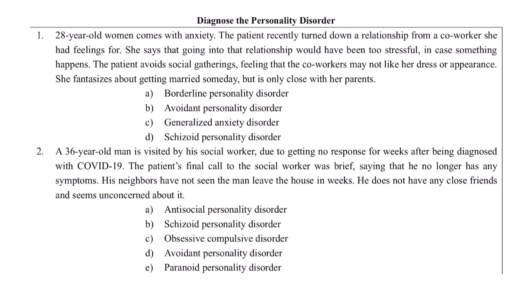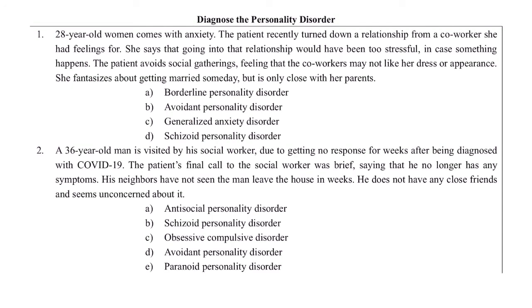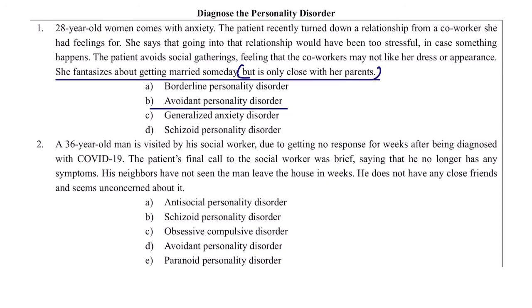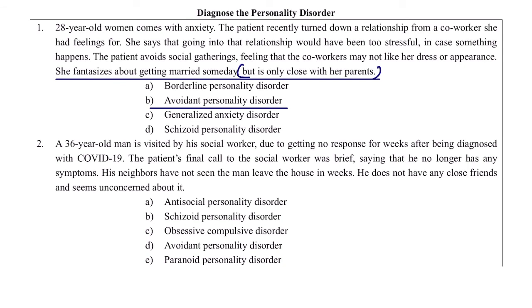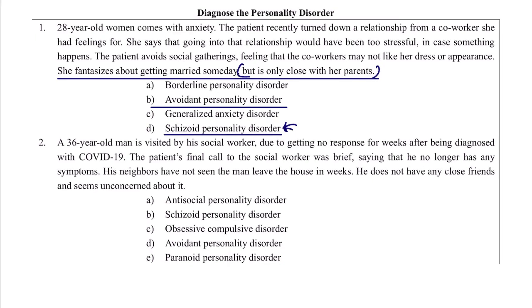Case: a 28-year-old woman comes with anxiety. She turned down a relationship with a co-worker she had feelings for, saying it would be too stressful in case something happens. She avoids social gatherings because she feels co-workers might not like her dress or appearance. She fantasizes about getting married someday but is only close with her parents. This is avoidant personality disorder — they avoid social situations out of fear of embarrassment. This is not schizoid personality disorder because this person is looking for a relationship and is not trying to be alone.